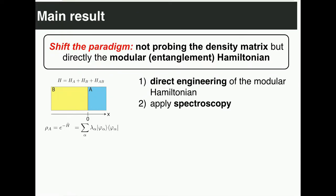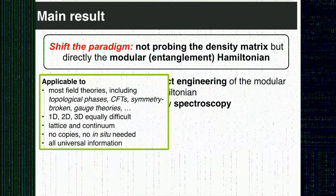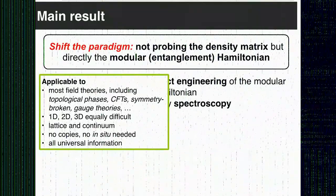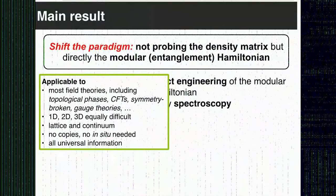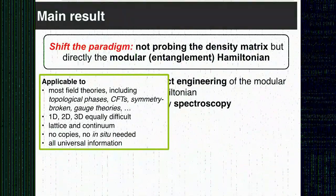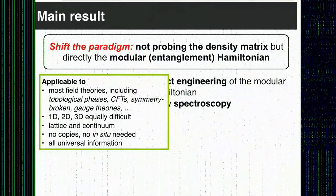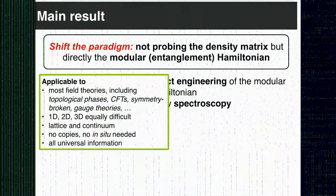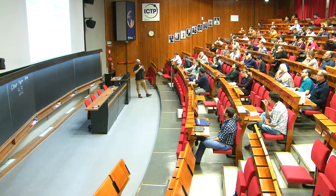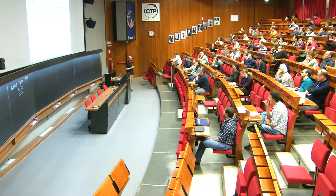The idea is really to completely decouple from the original problem — instead of building a reduced density matrix and probing it, mapping this to another problem which is much easier to solve. So we come back to our system: we want to directly engineer this object H-tilde, this entanglement Hamiltonian. Because then if we perform conventional spectroscopy, something done extremely well in many experimental setups, we get the entanglement spectrum we are interested in. What I will show is a specific recipe applicable to most quantum field theories, topological methods, many quantum critical points — in one, two, or three dimensions, on the lattice and in the continuum. It does not need copies or in-situ imaging. The only thing it needs is spectroscopy.